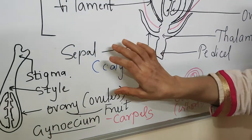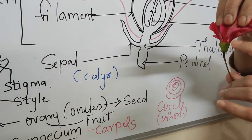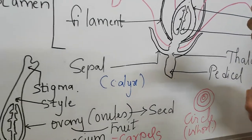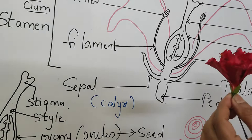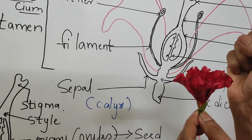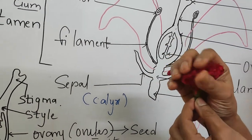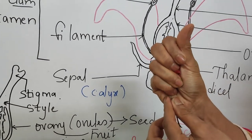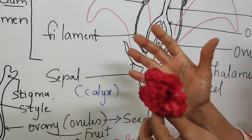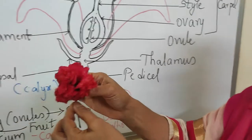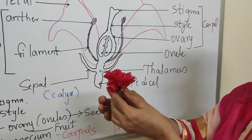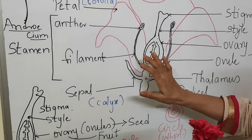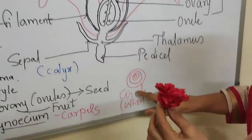The sepals are the green structures. They protect the flower in the bud condition — when it is in bud condition, the flowers are protected by these sepals. These green color structures protect it and don't let it die.